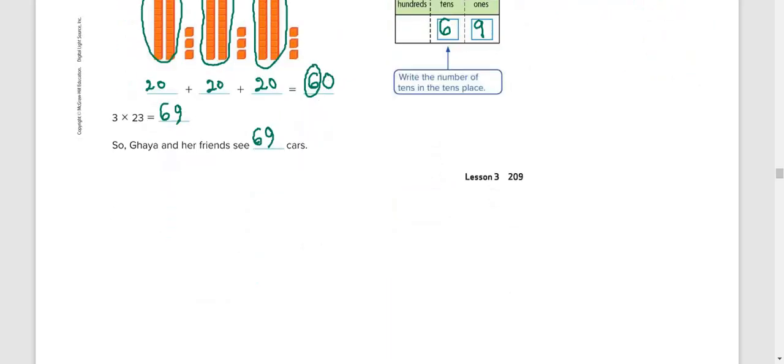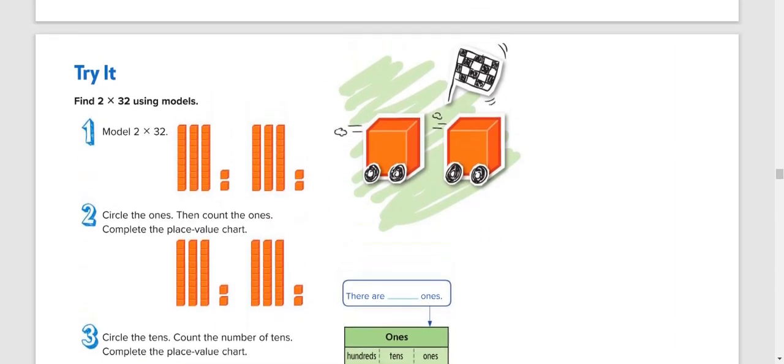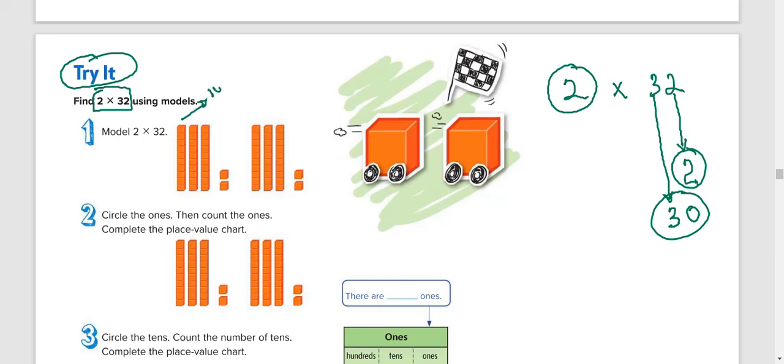We're going to take a look at another example quickly. So if I ask you now, in this question, try this. It says find 2 times 32. So 2 times 32. That means there will be 2 groups. 2 groups of what? 2 in the 1's place and 3 in the 10's place, that is 30. So 2 groups of 2 and 2 groups of 30. And remember that each of these blocks represents 10. So another 10, another 10, making 30. So 2 groups.